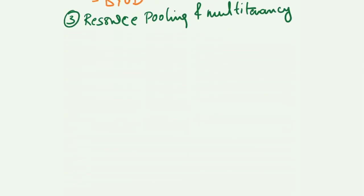The next key characteristic is resource pooling and multi-tenancy. Both of them work together. This talks about abstraction and apportionment of resources across multiple consumers. This is one of the most important concepts of cloud computing. This forms the basis of cloud computing.